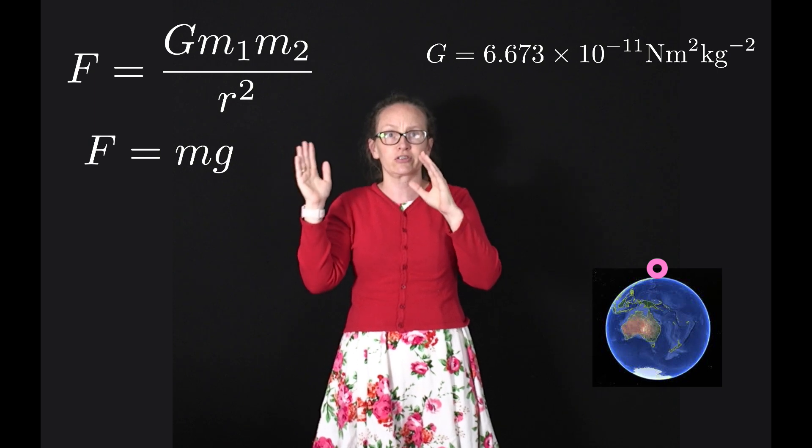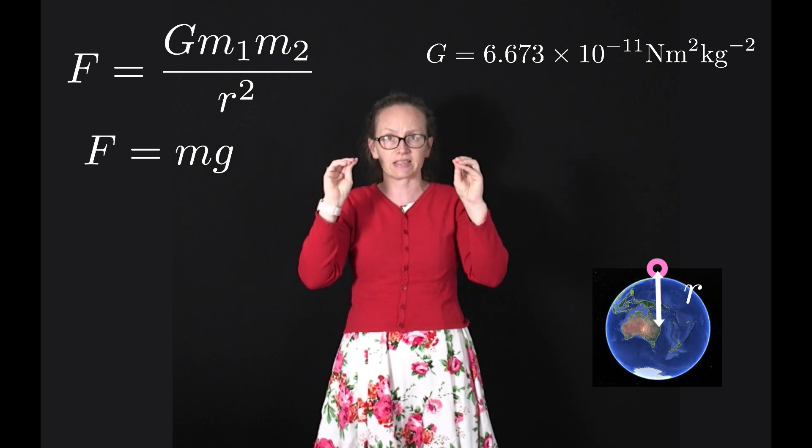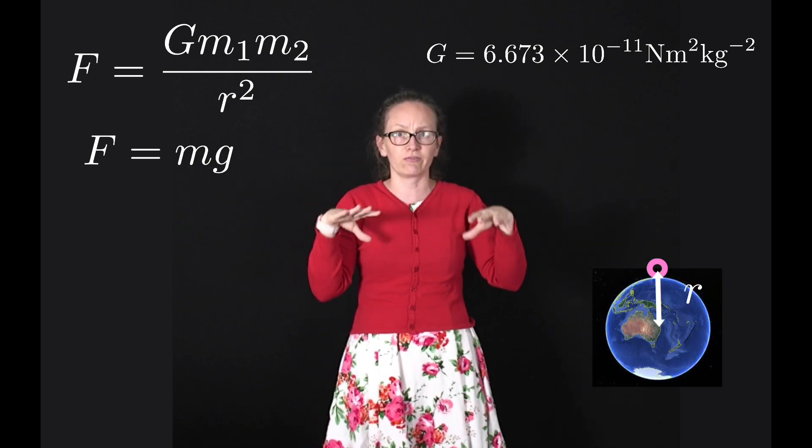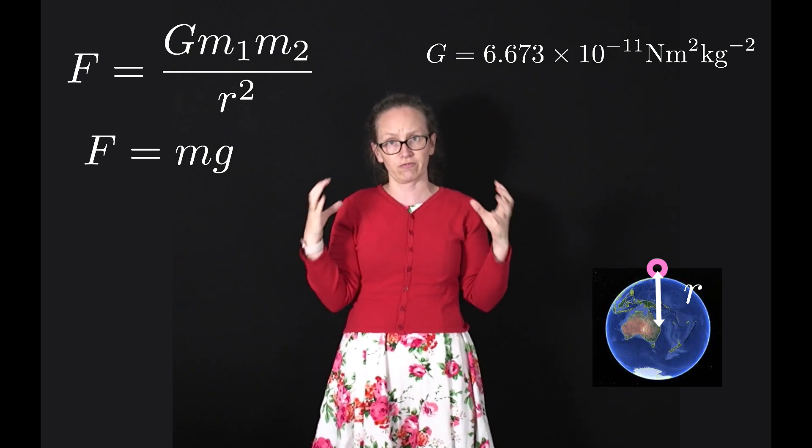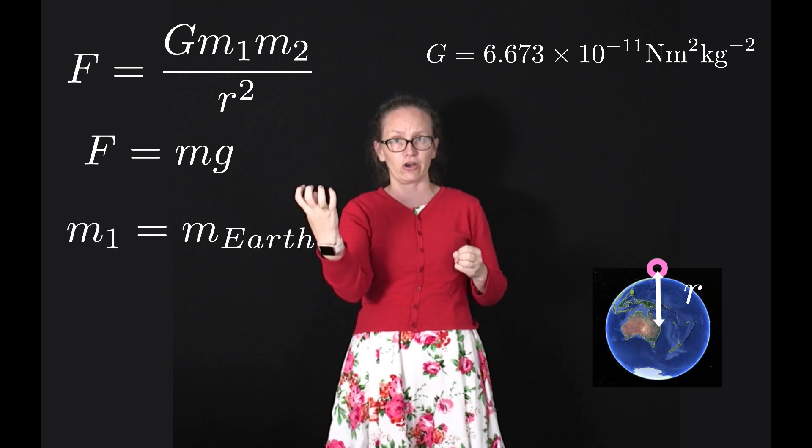Looking at the law of universal gravitation, we've got two masses. When we're considering the force between an object and the surface of the Earth, we're considering the gravitational force between that object and the Earth.